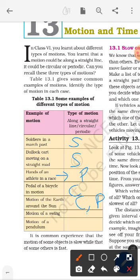Motion of a swing. Swing is also a to and fro motion, so it is a periodic motion. Motion of pendulum. It is also a periodic motion. So here are the types of motion.